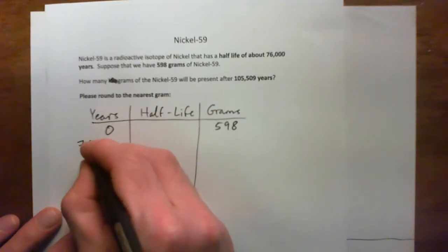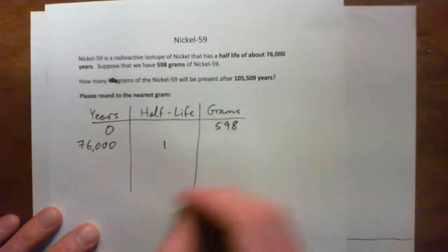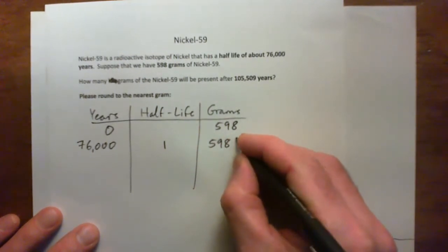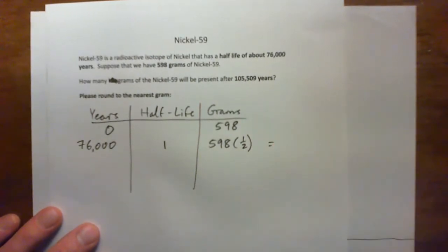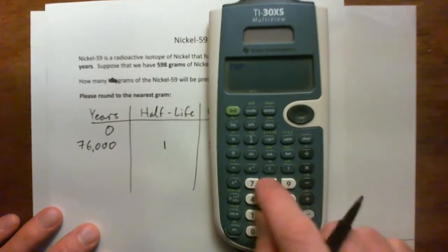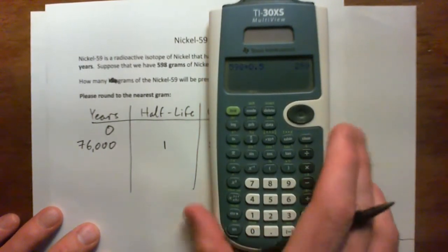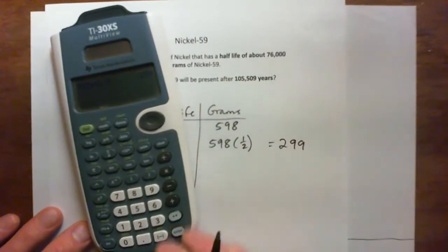But after 76,000 years, that's after one half-life, we'll have 598 times a half, or a half of that. And that will give us 598 times 0.5, 299 grams. Half of that remaining.